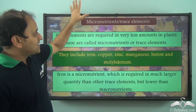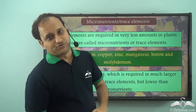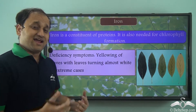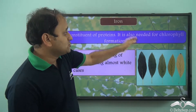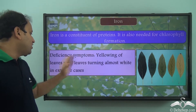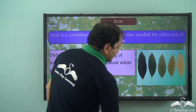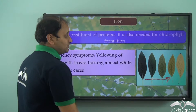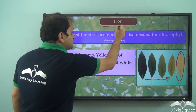So even though iron is a micronutrient, it is required in larger quantity compared to other micronutrients. Iron is a constituent of proteins and is also needed for chlorophyll formation. The deficiency symptoms are yellowing of leaves, with leaves turning almost white in extreme cases. As you can see, leaves gradually become yellow, and in extreme cases you can see almost white leaves, because there is a deficiency of iron.